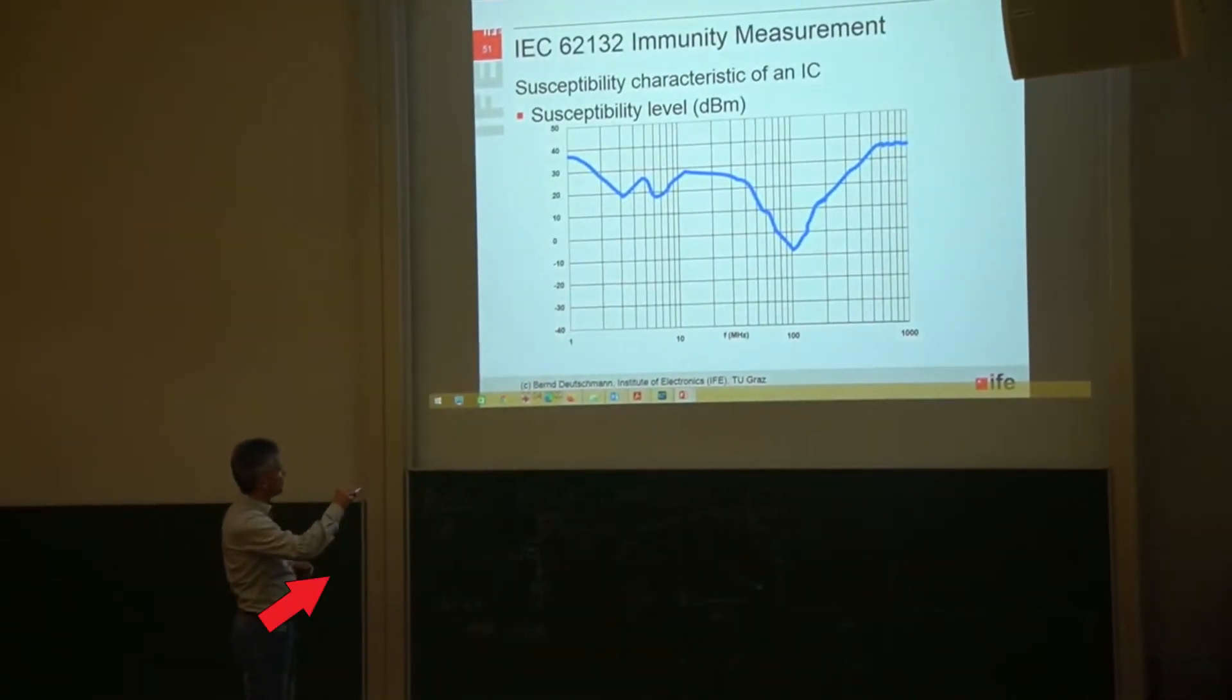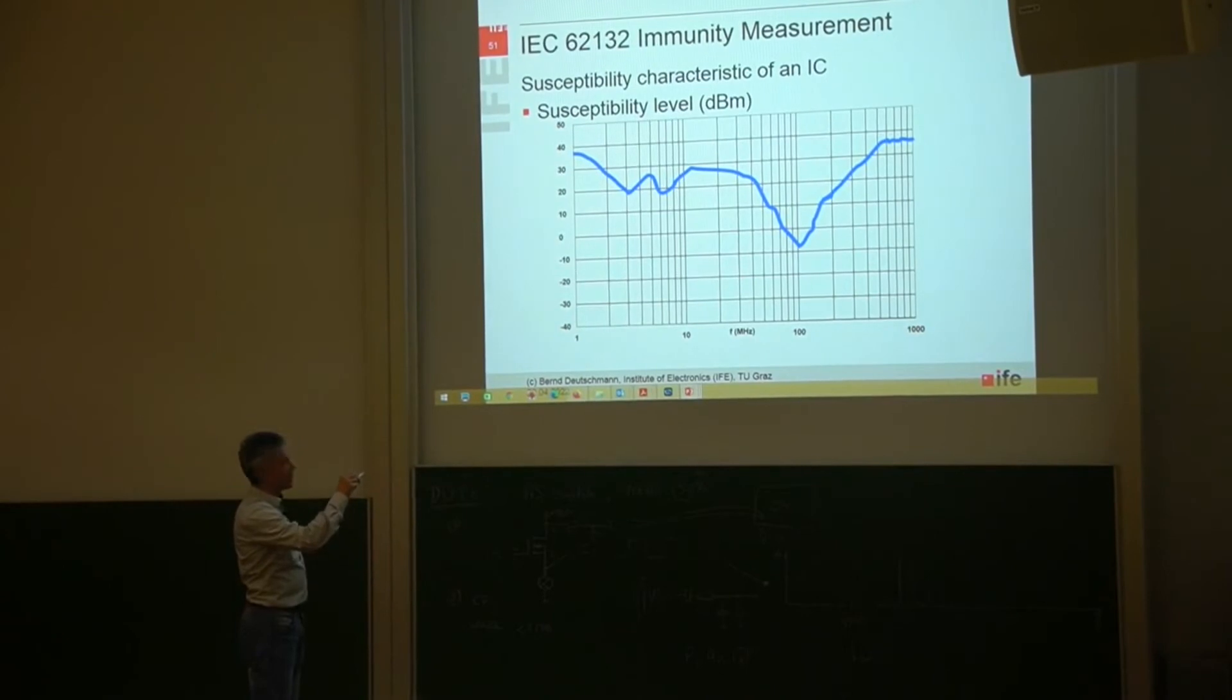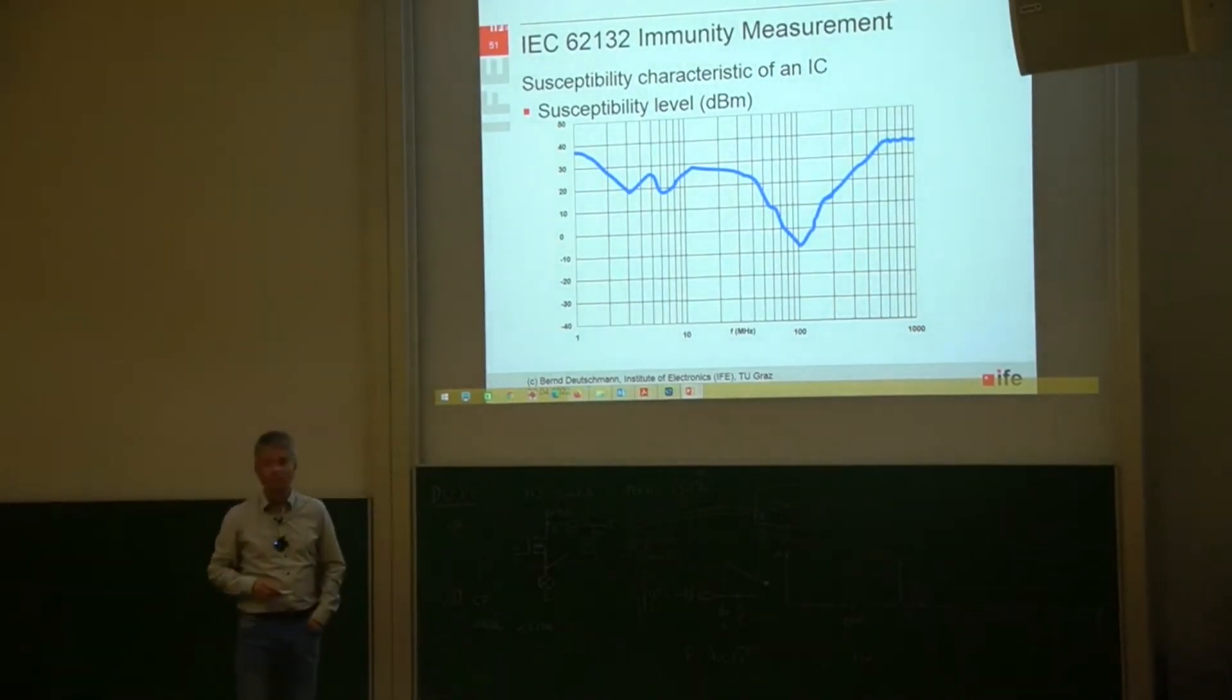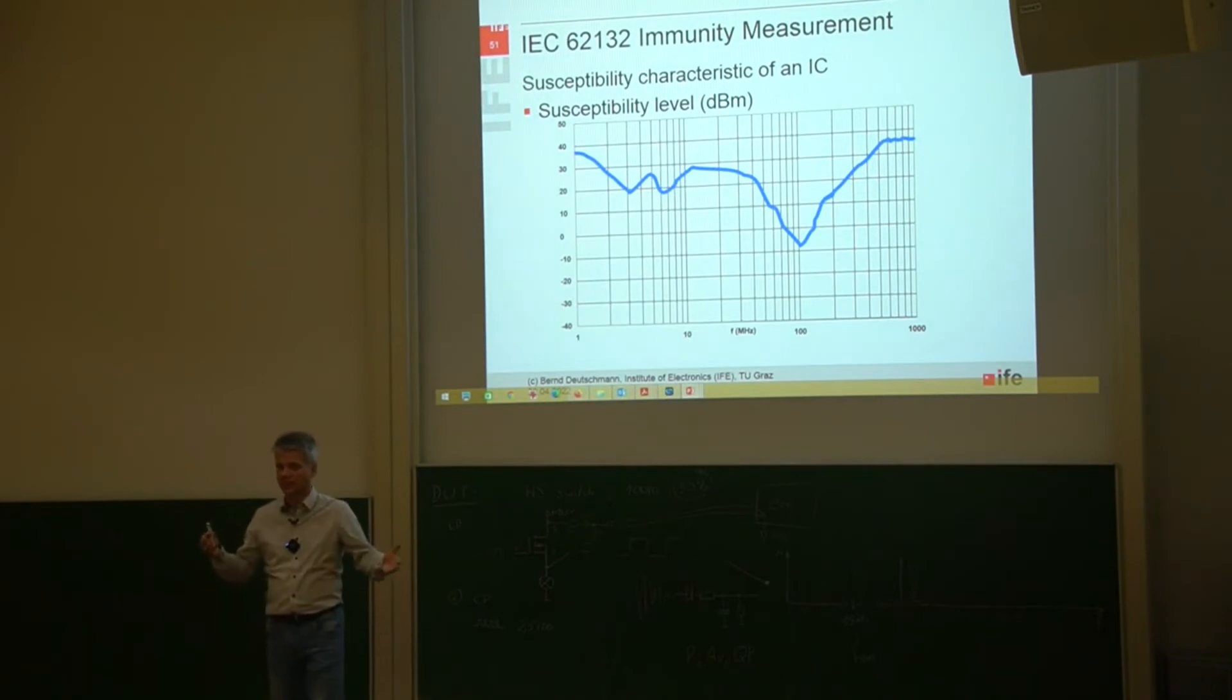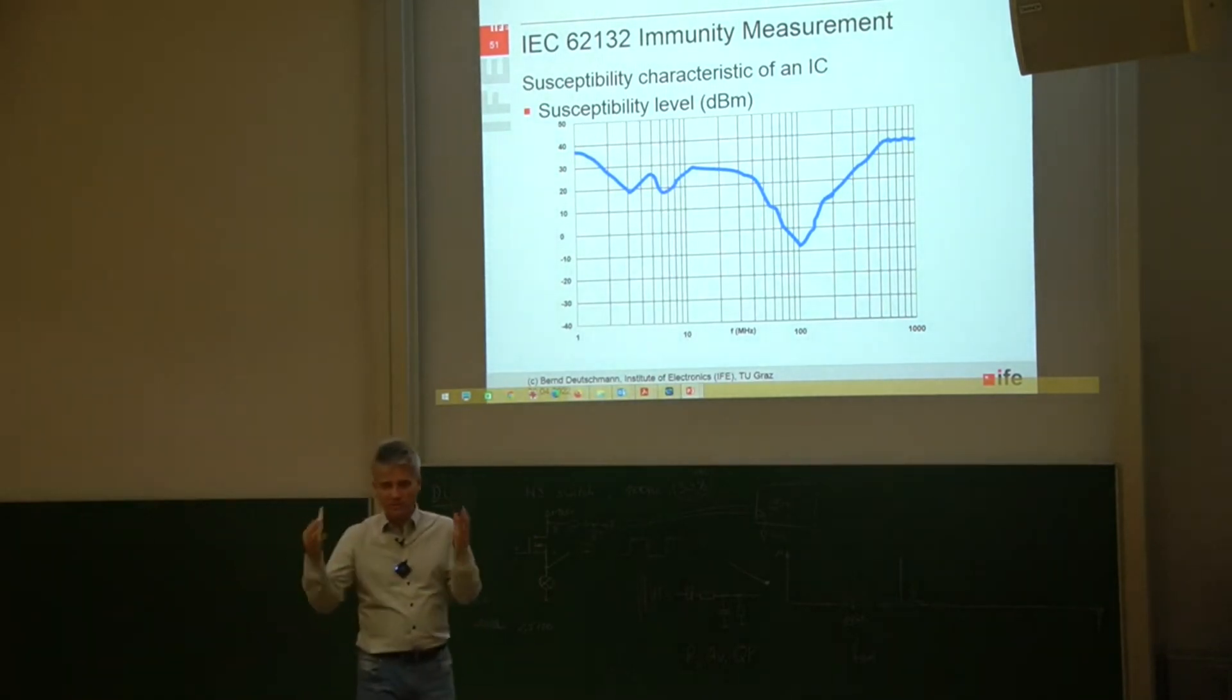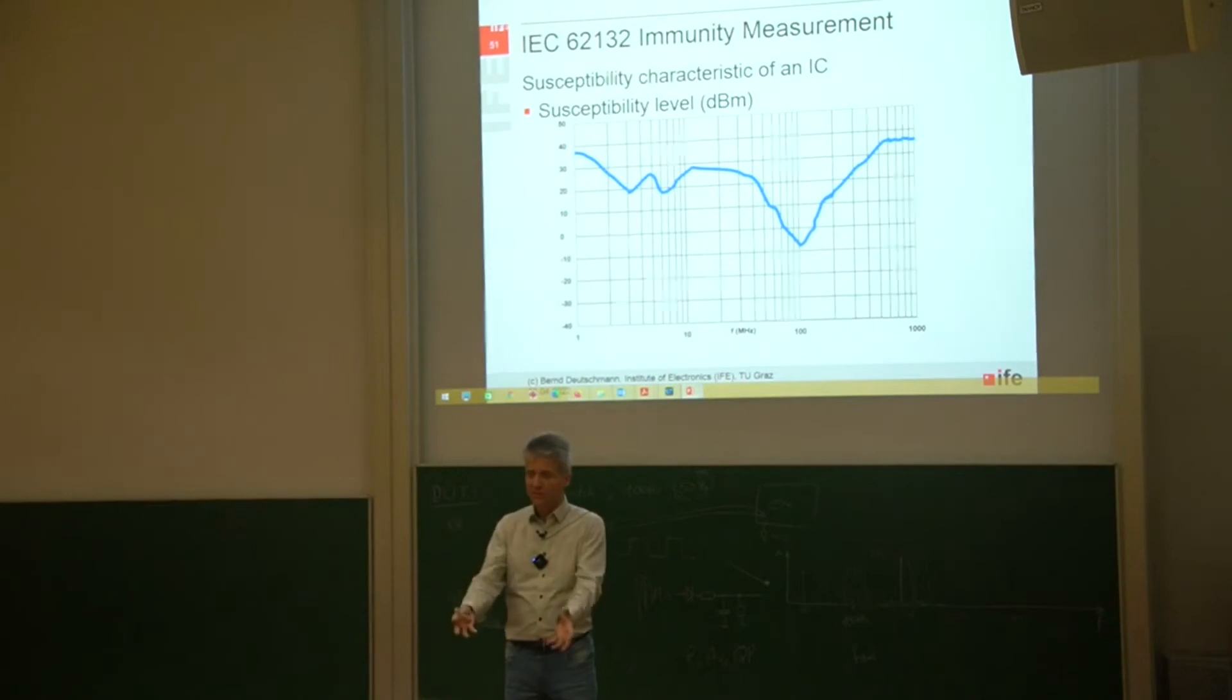We are starting here, for example at 1 megahertz, we are increasing the amplitude of our disturbance signal until our IC is not working properly anymore. What does it mean? This is very complicated because there are different kinds of ICs and there can be different kinds of interferences.